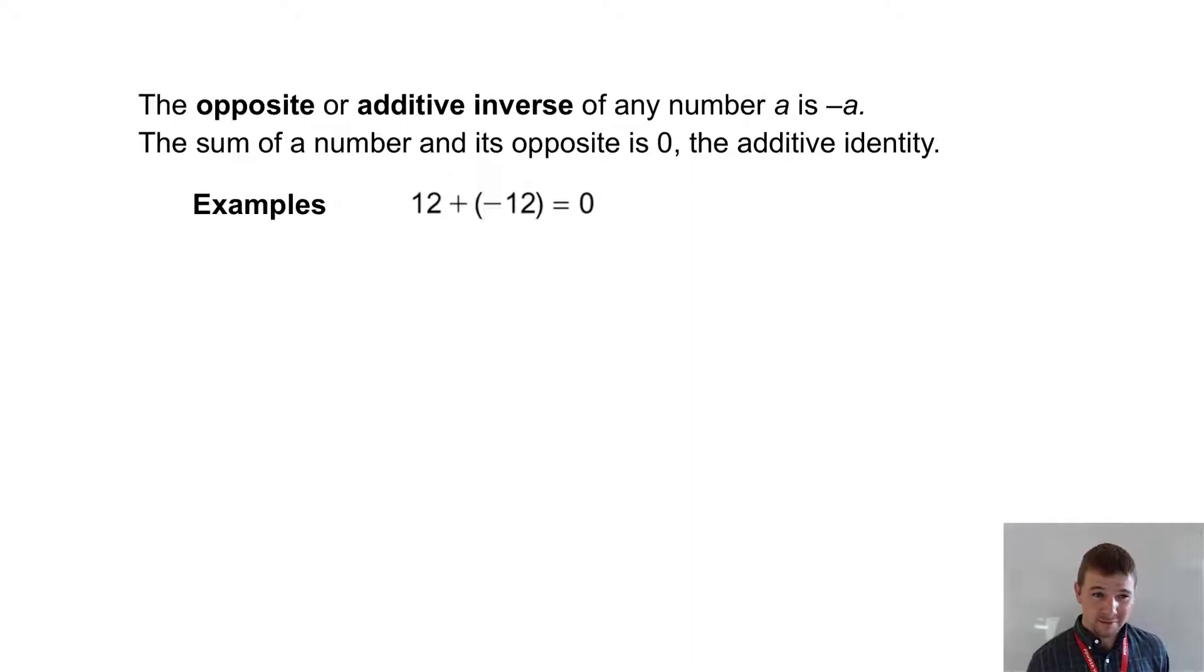Some examples. Twelve plus negative twelve, its opposite, equals zero. Negative seven plus seven also equals zero.